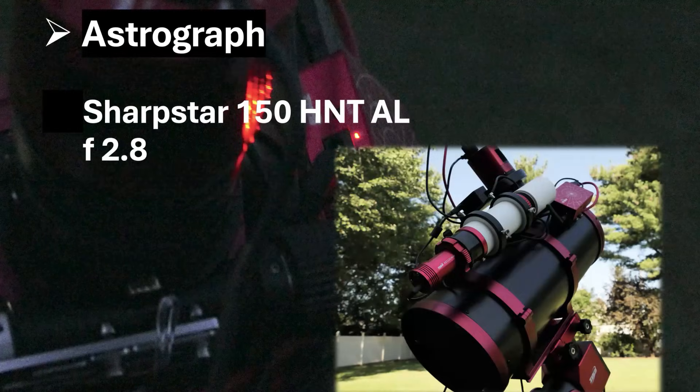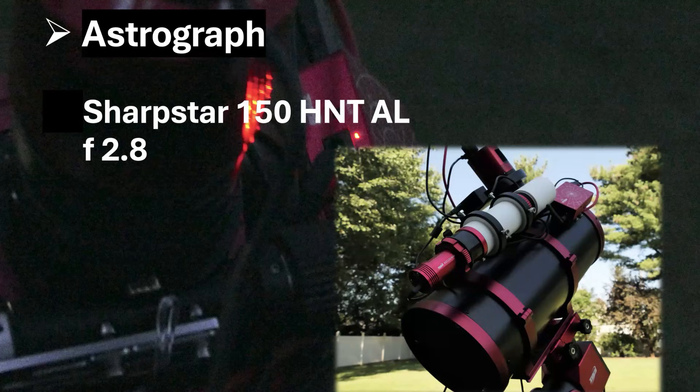I'm using the Sharp Star 150 millimeter hyperbolic Newton astrograph with an f-ratio of 2.8. I don't see a conflict in using a fast telescope and still trying to get the best resolution out of it, rather than the largest field of view, as we trend to sensors with smaller but more pixels and resolution enhancing post-processing.